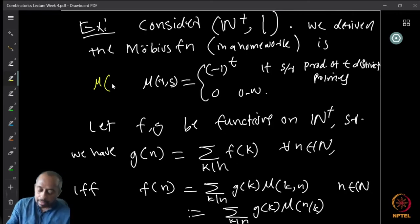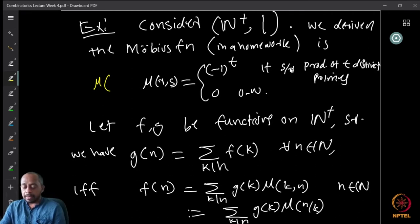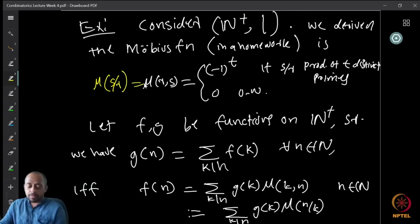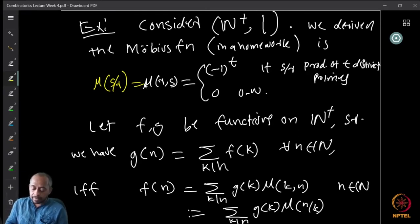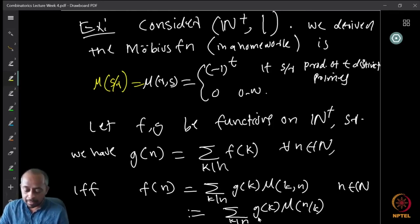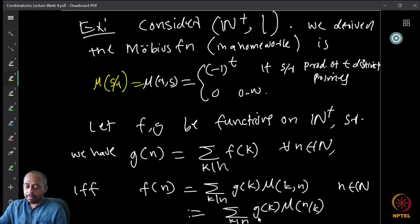By Möbius inversion, f(n) = Σ_{k | n} g(k)·μ(k, n). Since μ(r, s) depends only on s/r, we can write it as a single-variable function μ(n/k). Therefore f(n) = Σ_{k | n} g(k)·μ(n/k), which is precisely the classical Möbius inversion formula from number theory — this is likely why the name Möbius inversion stuck to this generalization.